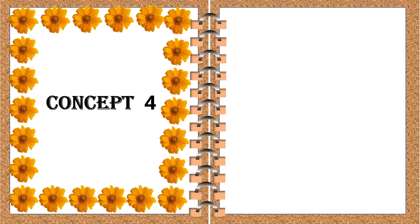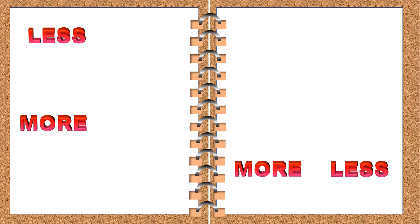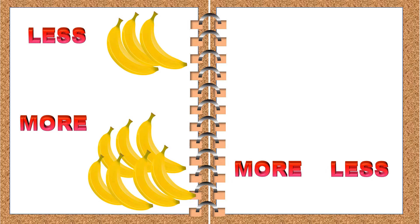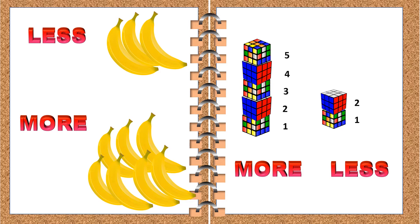Let's move on to our next concept. The next concept is less and more. Let's see what different examples the book has. These are three bananas. These are seven bananas — so seven is more, three is less. Let's see the next example. These are five blocks. These are two blocks. So the left side has more blocks, the right side has less number of blocks. So whenever we say less and more, it is always in terms of quantity.